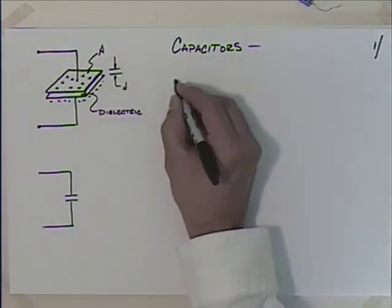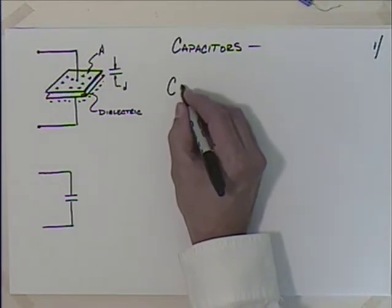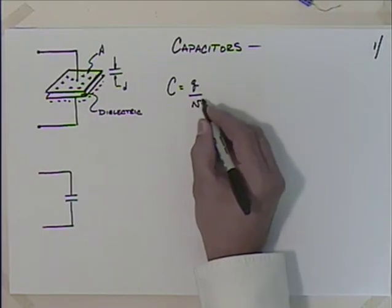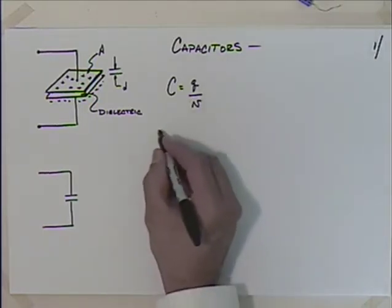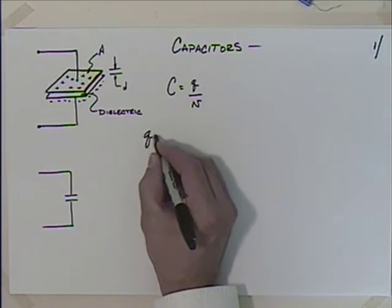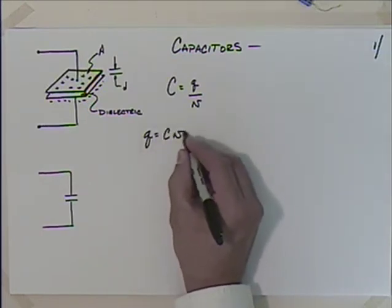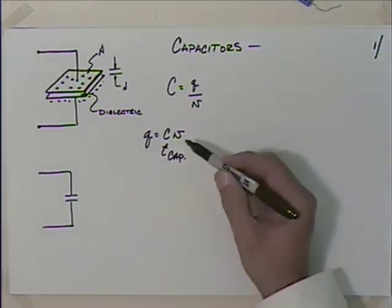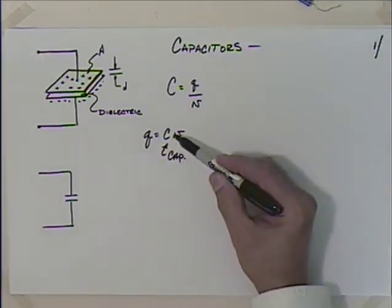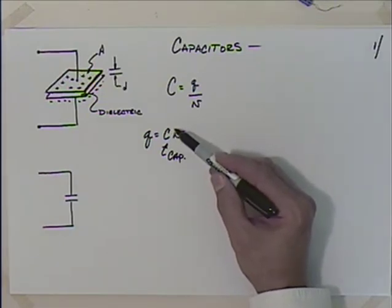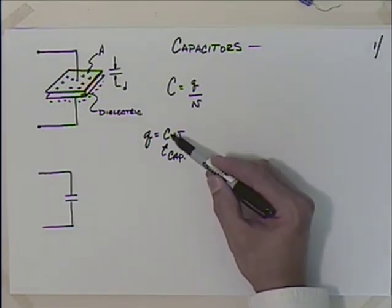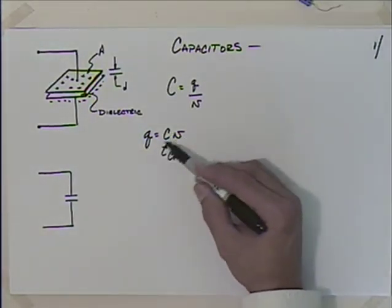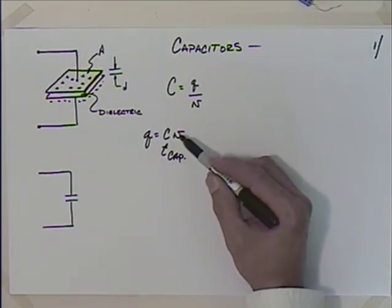The capacitance C has a governing equation: charge divided by voltage, so C = q/V. Rearranging, charge equals capacitance times voltage: q = CV. This is why when we first started talking about charge in Coulombs, I said don't abbreviate Coulombs with C, because it's much more traditional to abbreviate capacitance with C.